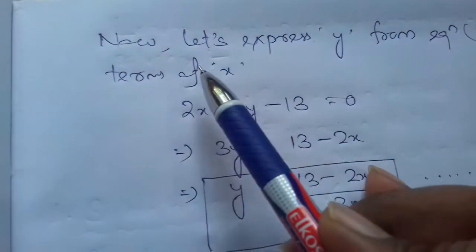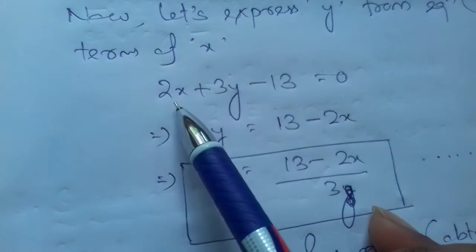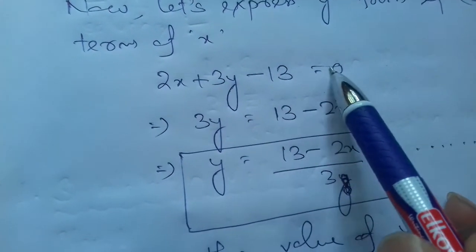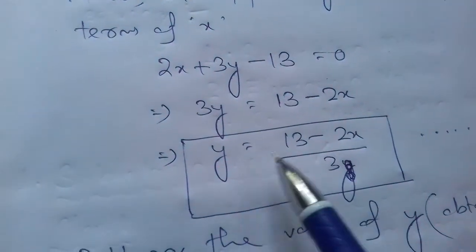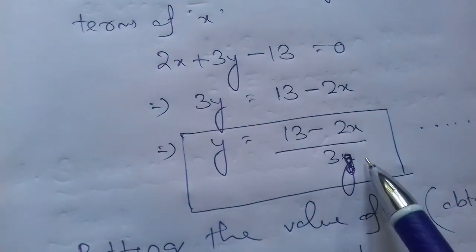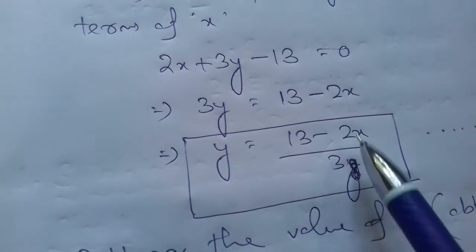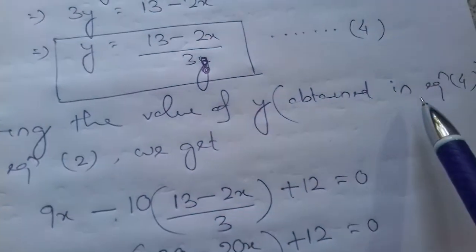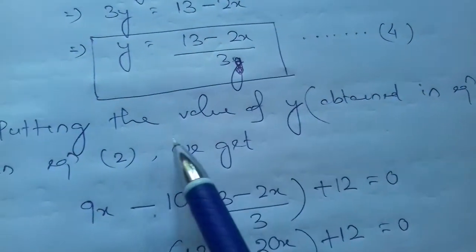Now let's express y from equation 3 in terms of x. Equation 3 is 2x + 3y − 13 = 0, so 3y = 13 − 2x, therefore y = (13 − 2x) / 3. This is equation 4.